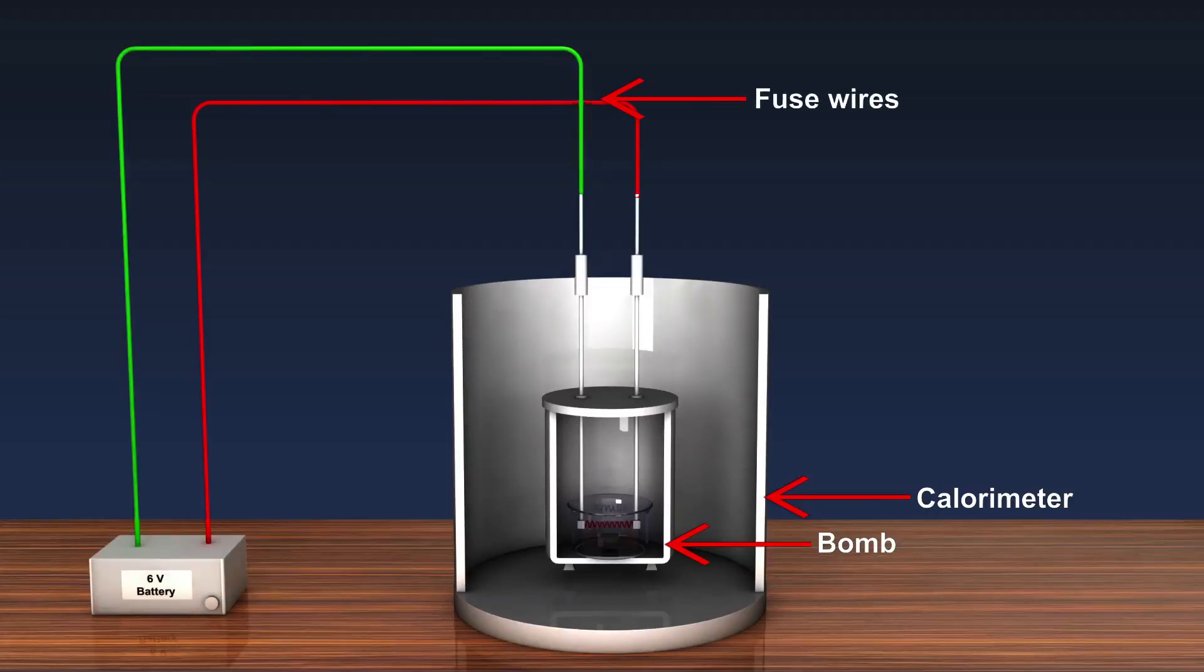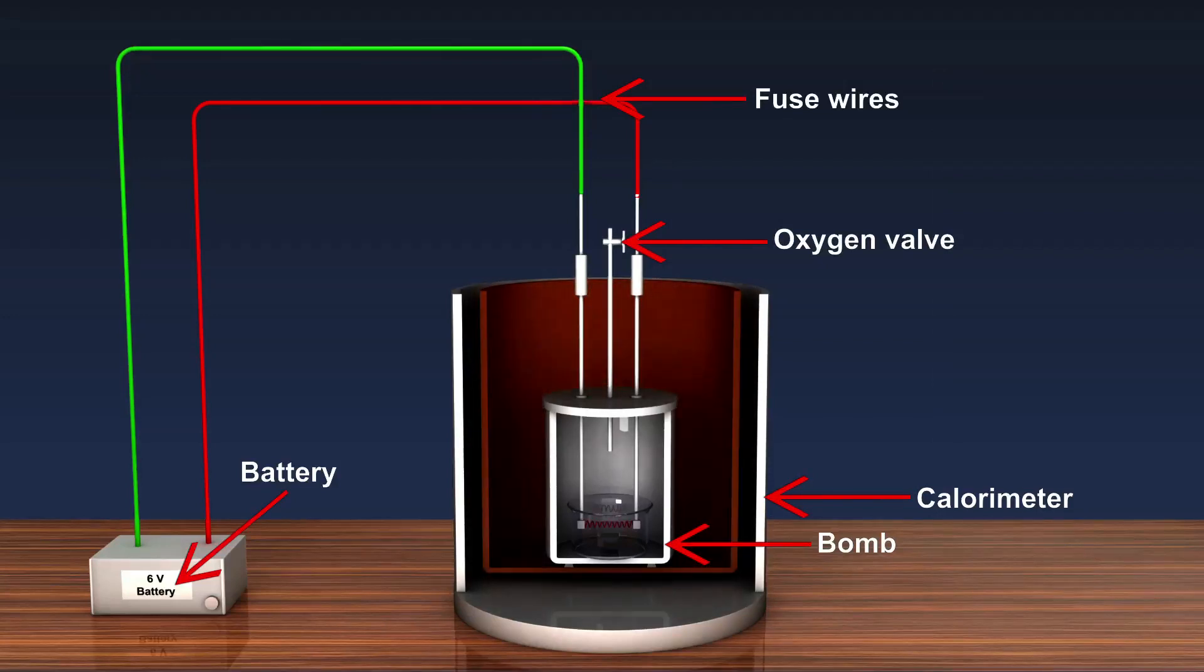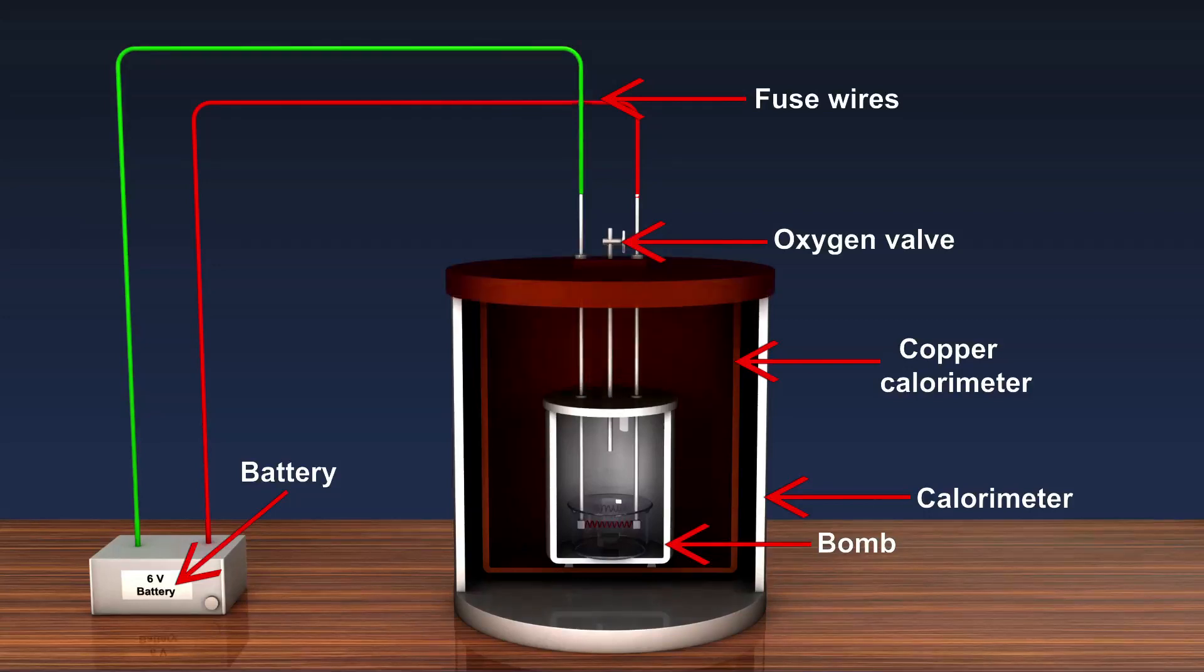Two fuse wires made of magnesium fixed to a 6-volt battery are used to ignite the fuel. A channel for the supply of oxygen is placed to help the burning of fuel. The steel shell or the bomb is enclosed inside the copper calorimeter. The calorimeter is closed from top using a copper lid.